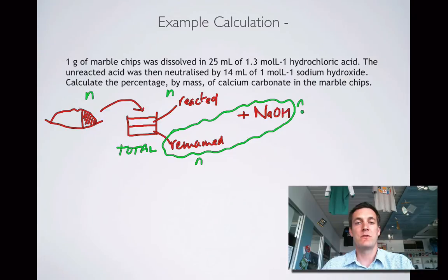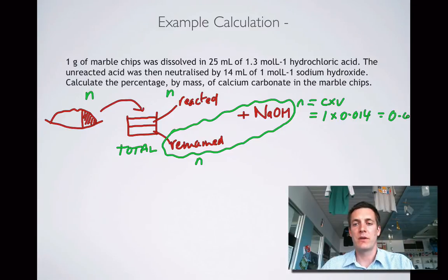Well, the number of moles of sodium hydroxide, that equals n equals C times V, right? So the number of moles of sodium hydroxide is, well, that's just 1 times 0.014. 1 times 0.014. And that's 0.014. So we've got 0.014 moles of sodium hydroxide.